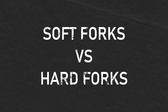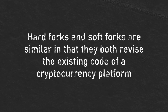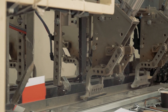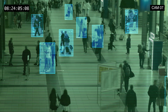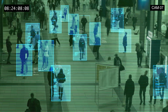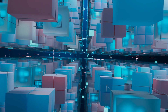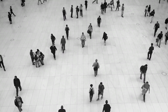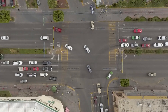Hard forks and soft forks are similar in that they both revise the existing code of a cryptocurrency platform. While both types of forks are necessary for the continuous operation and successful governance of blockchain networks, there are significant differences. A soft fork results in the original blockchain remaining valid as an increasing number of people apply the new version — it is simply a gradual update. With a hard fork, the old and new blockchains coexist, requiring users to update their software to run under the new rules. Simply put, a hard fork is a sudden split in the blockchain.